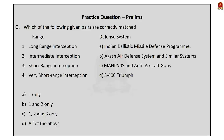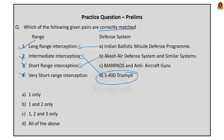Question three: Which of the following pairs are correctly matched — range versus defense system? Only the first pair is correctly matched. The Indian ballistic missile defense program is long-range interception; S-400 is intermediate interception; Akash air defense and similar systems are short-range interception; and man-portable air defense systems, called MANPADS, along with anti-aircraft guns are very short-range interception. So the answer is option A — one only.